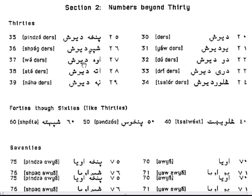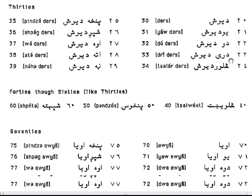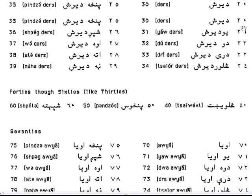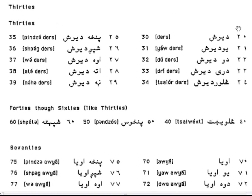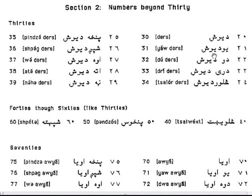Numbers beyond 30. Of course, 30 would be Dersh, Jaudersh. Again in Pashto you start with the one and then the tens.